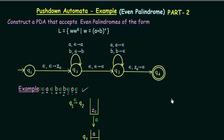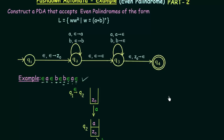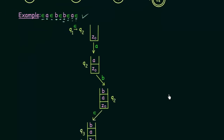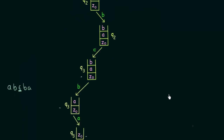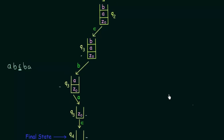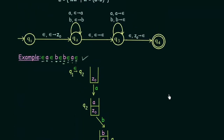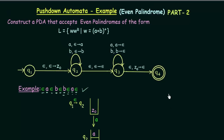In the next lecture, I will show another example where we pass a string that is not an even palindrome into our push-down automata and see how it behaves. I hope this was clear. If you have any doubts, drop them in the comment section below. It's a bit lengthy, but once you understand it, it's not very difficult. Thank you for watching, and see you in the next one.